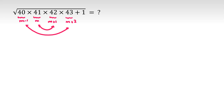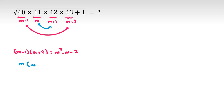Using the outer and inner pairs: m minus 1 times m plus 2 equals m squared minus m minus 2. Then m times m plus 1 equals m squared plus m. We can see these two expressions are closely related in terms of m.